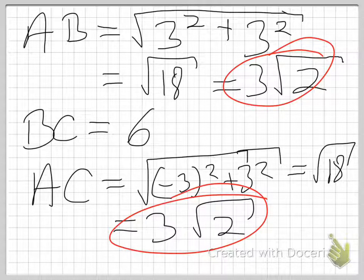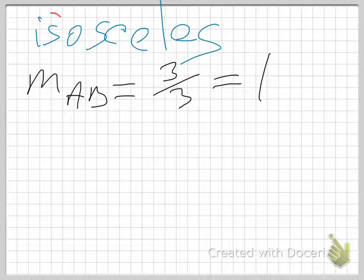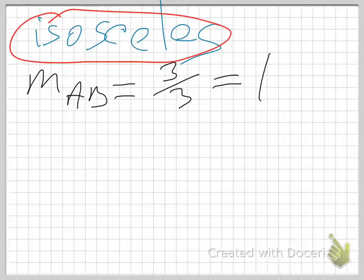So AB is 3√2 and AC is 3√2. Since two sides are congruent, we have an isosceles triangle. So far we know it's isosceles.